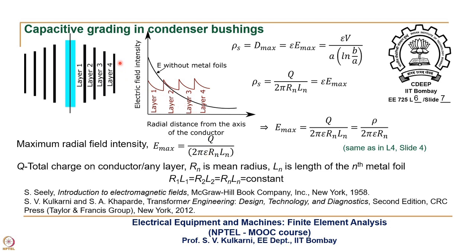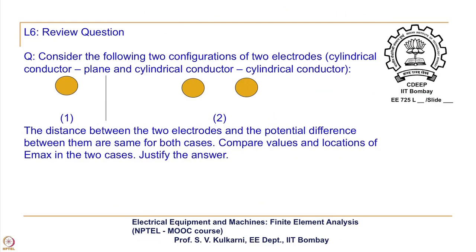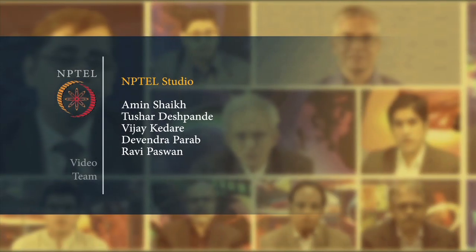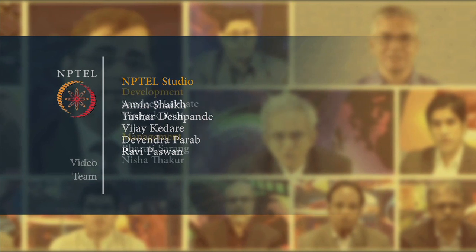These derivations have involved approximations such as neglecting fringing at the ends. For a full analysis including fringing effects, finite element analysis is needed, which we will cover in a later lecture. With this, we conclude Lecture 6 and have finished the electrostatics portion of the course. The next lecture will begin with magnetic fields. Thank you.